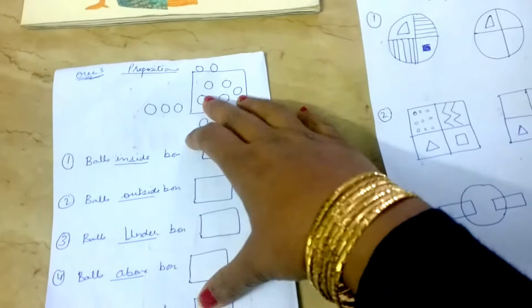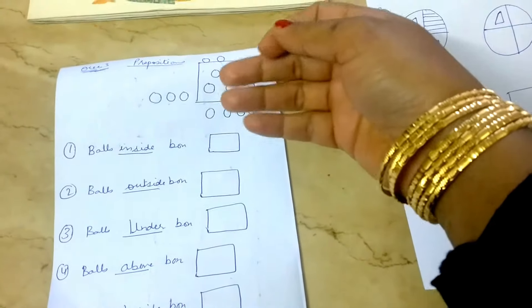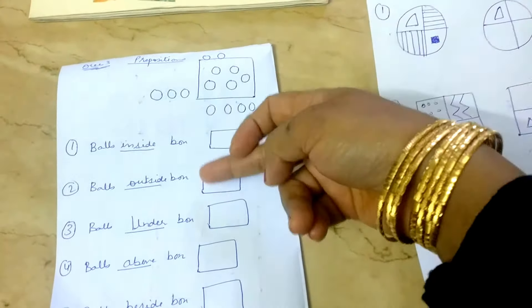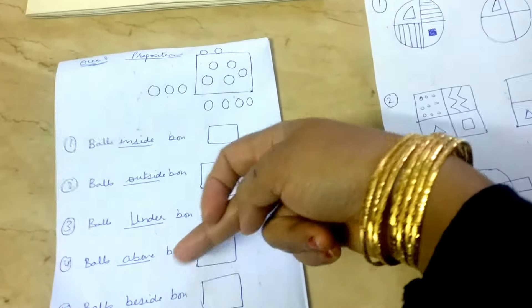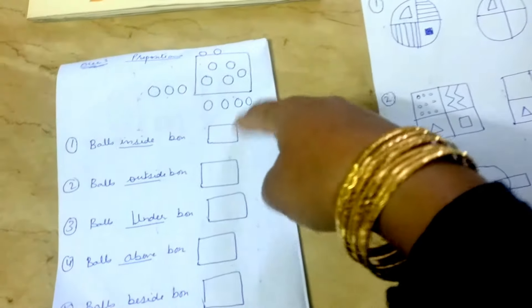This one is prepositions. Again, it is writing numbers. How many balls are inside the box, outside the box, under the box, above the box, and beside the box. She has to count and write it there.